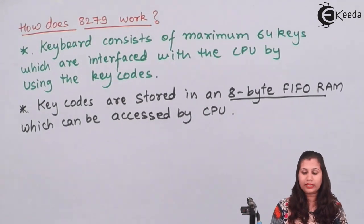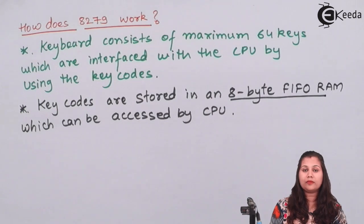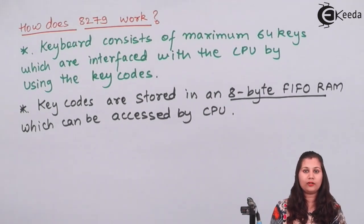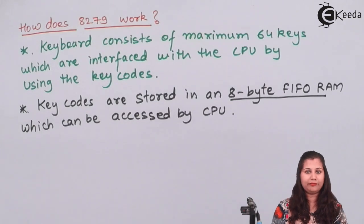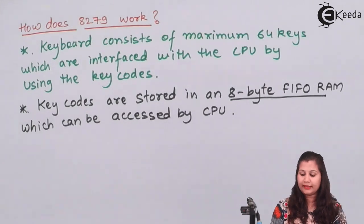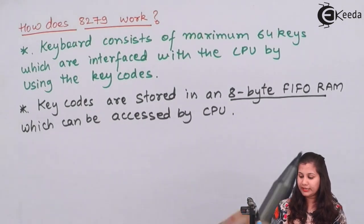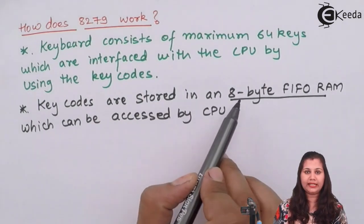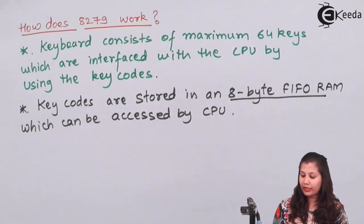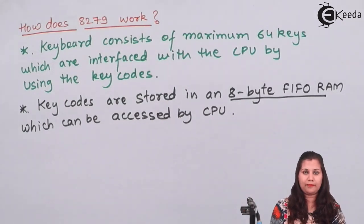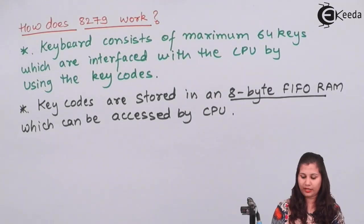If more than 8 keys are pressed, because the FIFO can store only 8 bytes, and more than 8 key codes are entered, that condition is known as overrun.